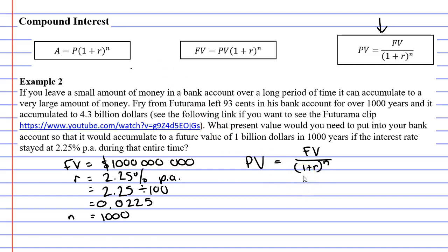All right, so we want our future value to be $1 billion. And then we're going to have 1 plus 0.0225 to the power of 1,000. Let's see what we get.